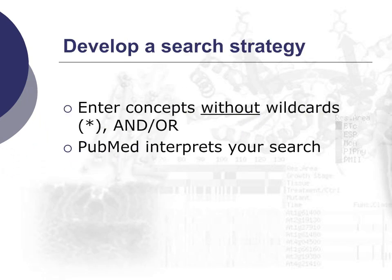PubMed works quite differently than Web of Science. In order to optimize a search in Web of Science, you would use search strategies such as wildcards, as well as AND or OR between your search terms. For more information, please watch the Finding Primary Research and Review Articles in Web of Science video. In PubMed, you would search a bit differently — PubMed interprets your search behind the scenes, and this optimization feature would be turned off if you start using AND, OR, or wildcard asterisks.